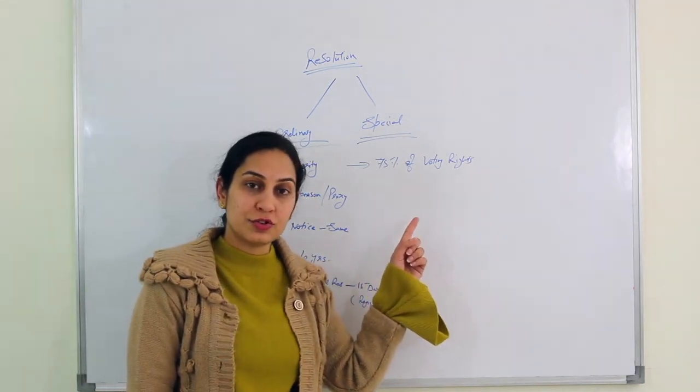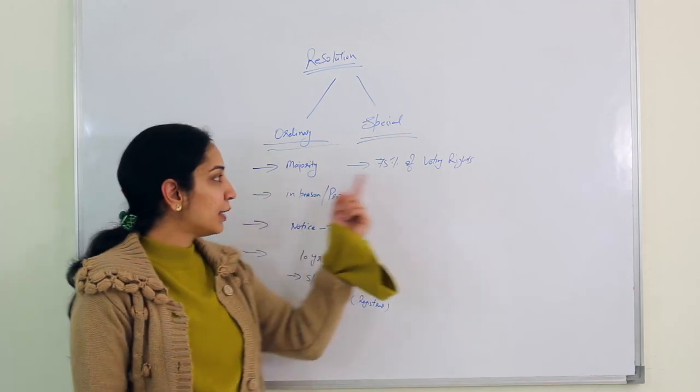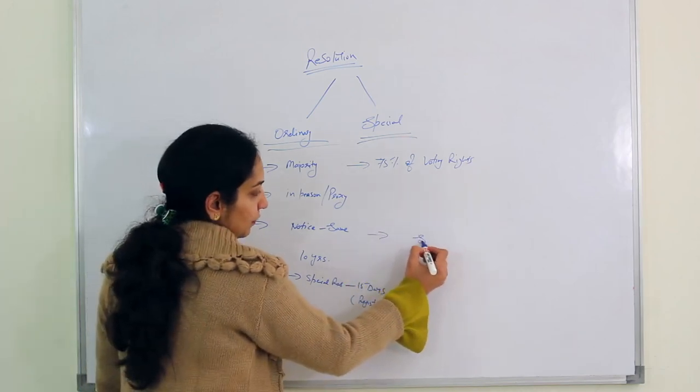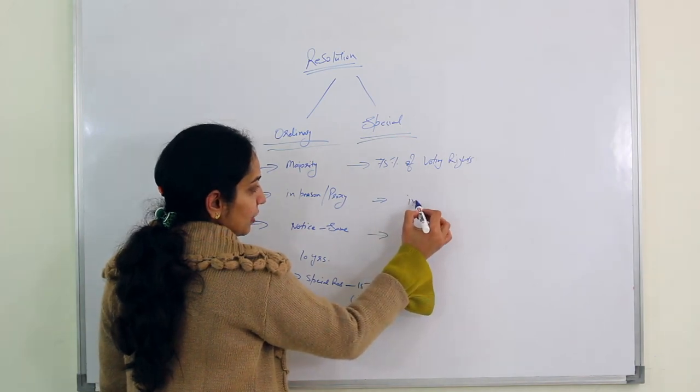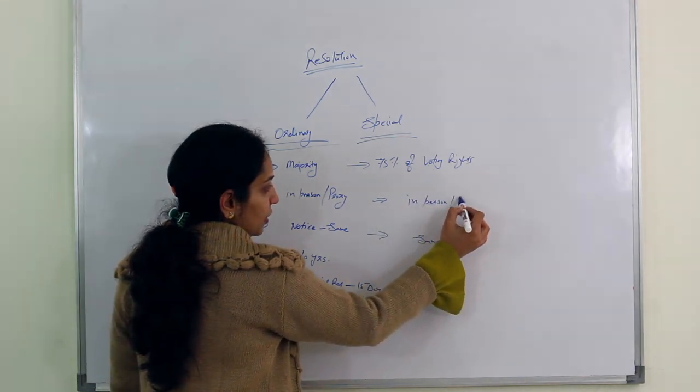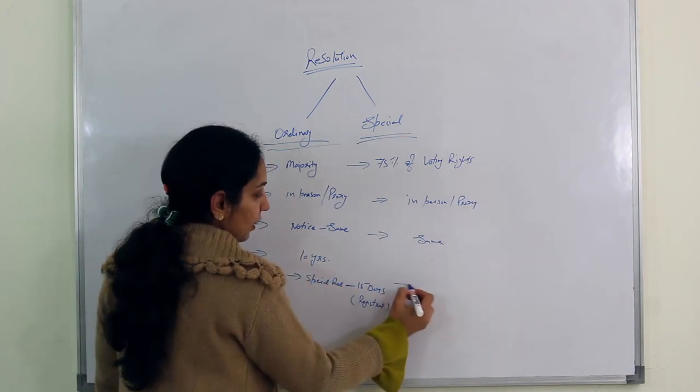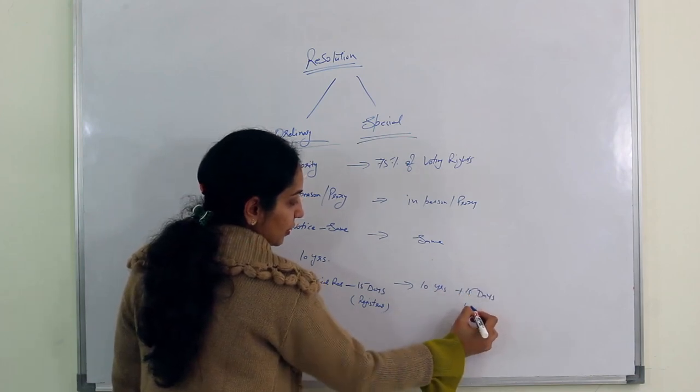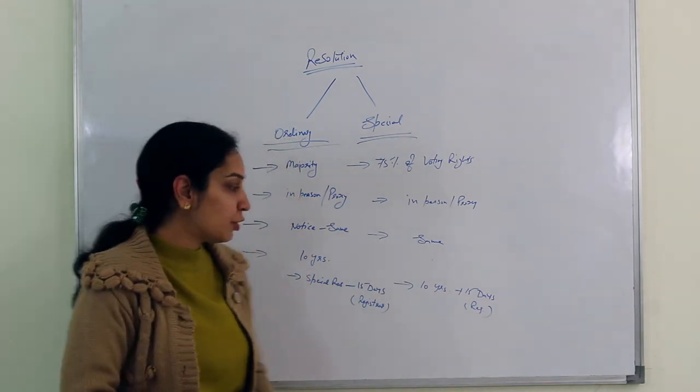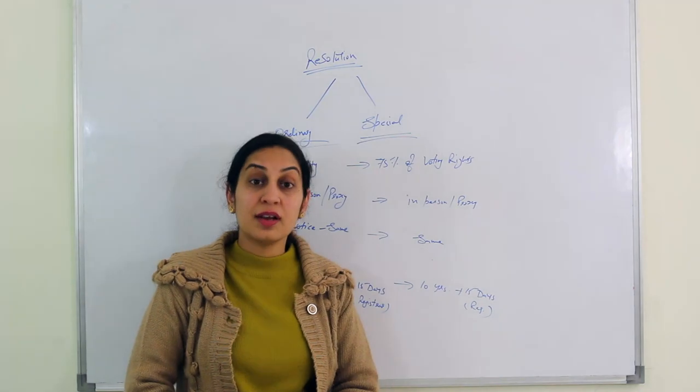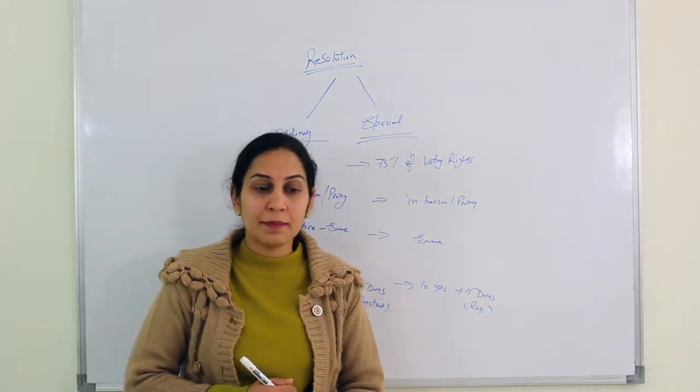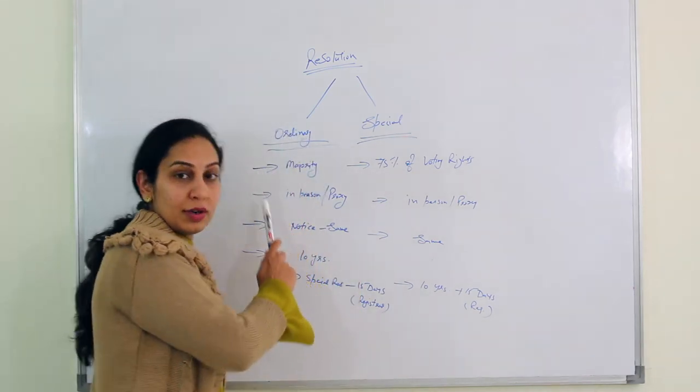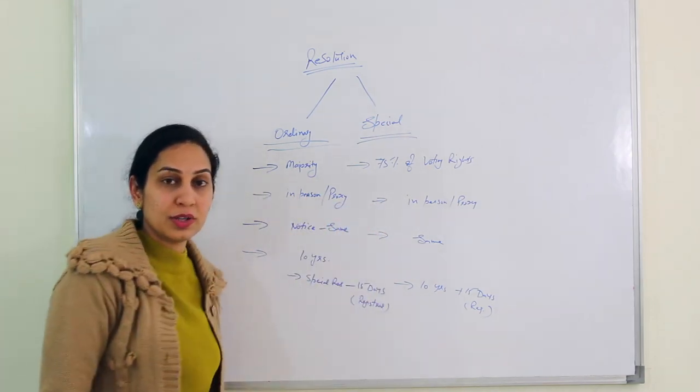Let's talk about special resolution now. For special resolution minimum 75 percent of voting rights. Minimum 75 percent of voting rights. That means of the people who have voting rights, within minimum 75 percent when they say in favor or against, we call that special resolution. Here ordinary majority is not counted, 75 percent of the voting rights is counted. Again notice is same here also. It can be again in person or proxy with the same clause and it has to be maintained for 10 years plus within 15 days it has to be filed with registrar. So here there is no choice. Special resolutions are always filed with registrar within 15 days.